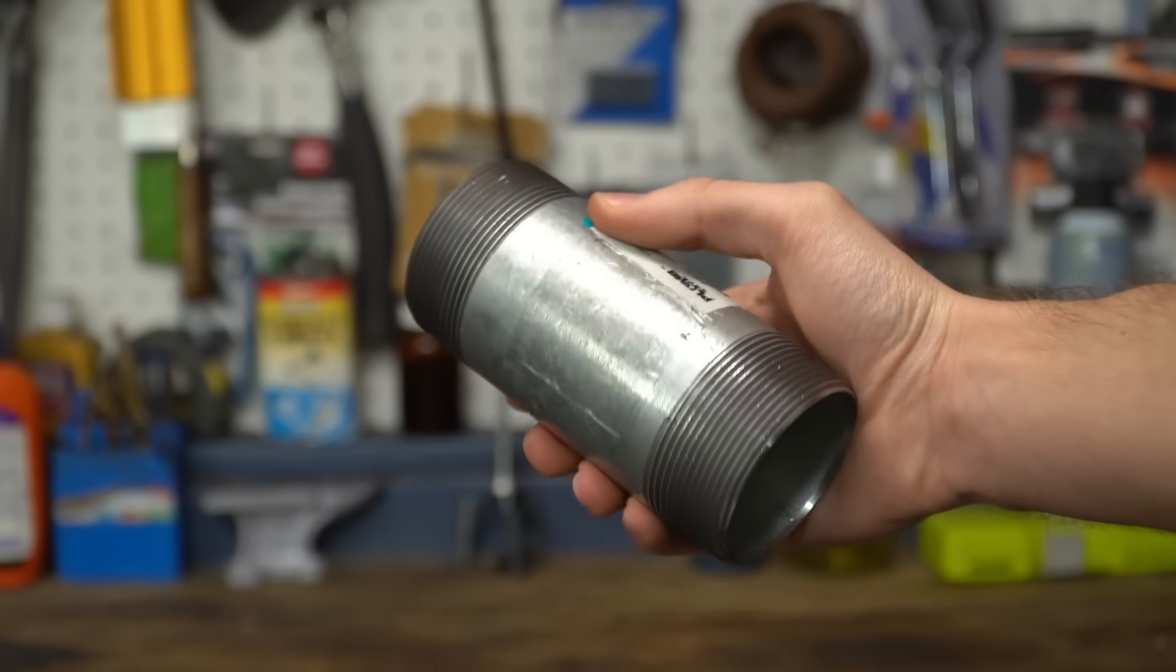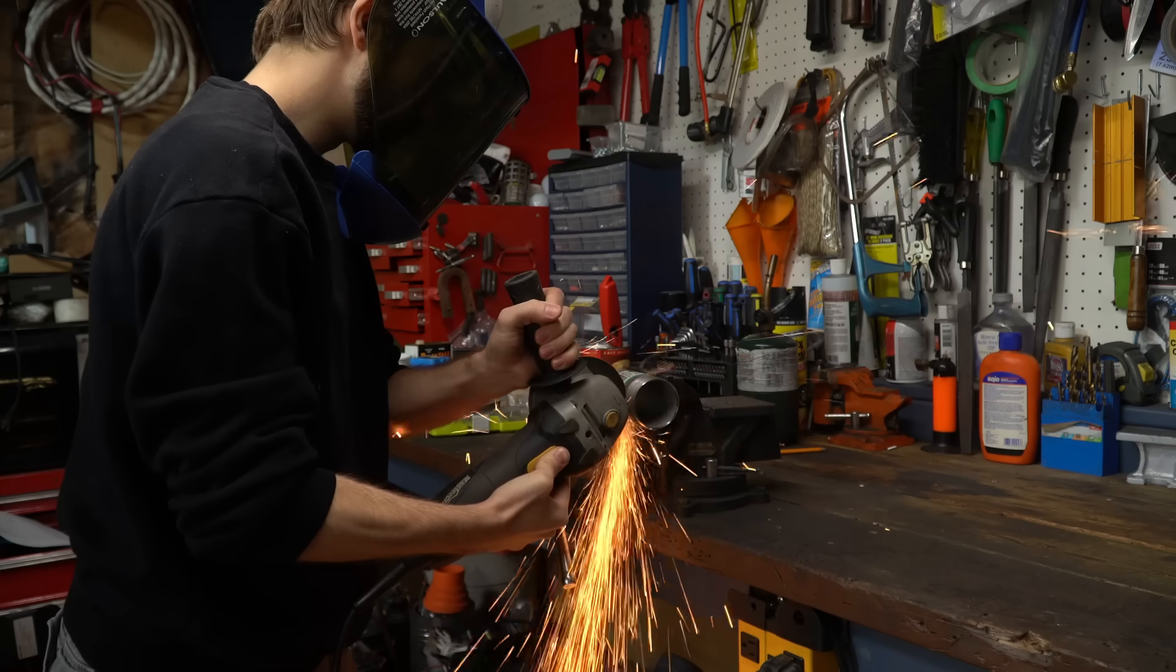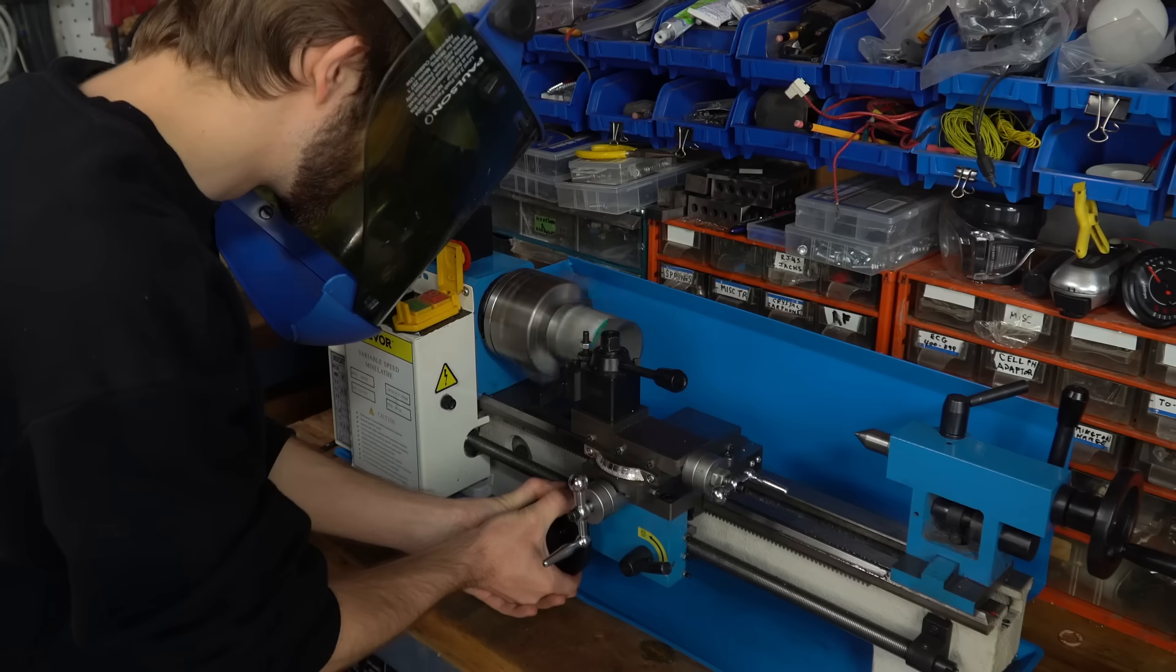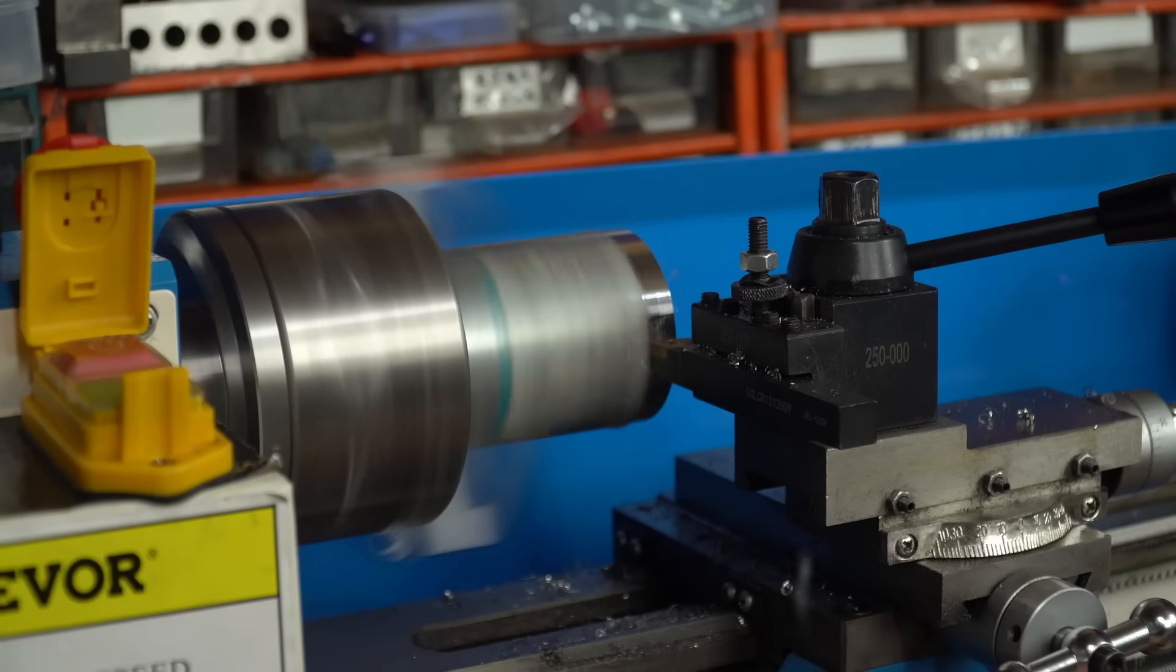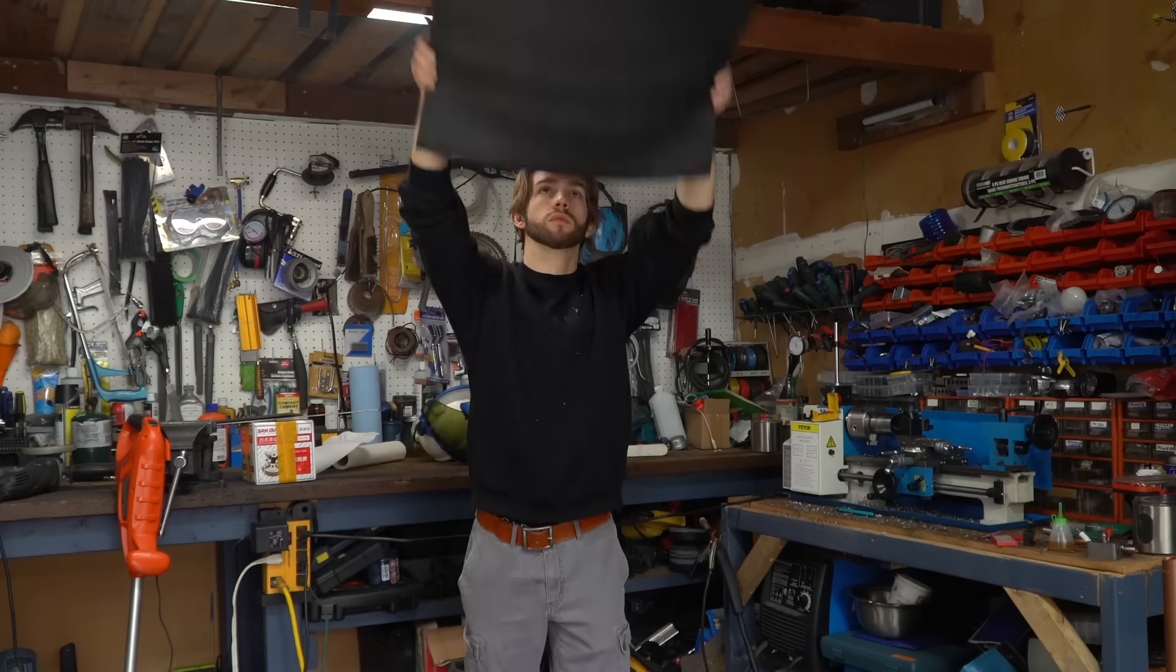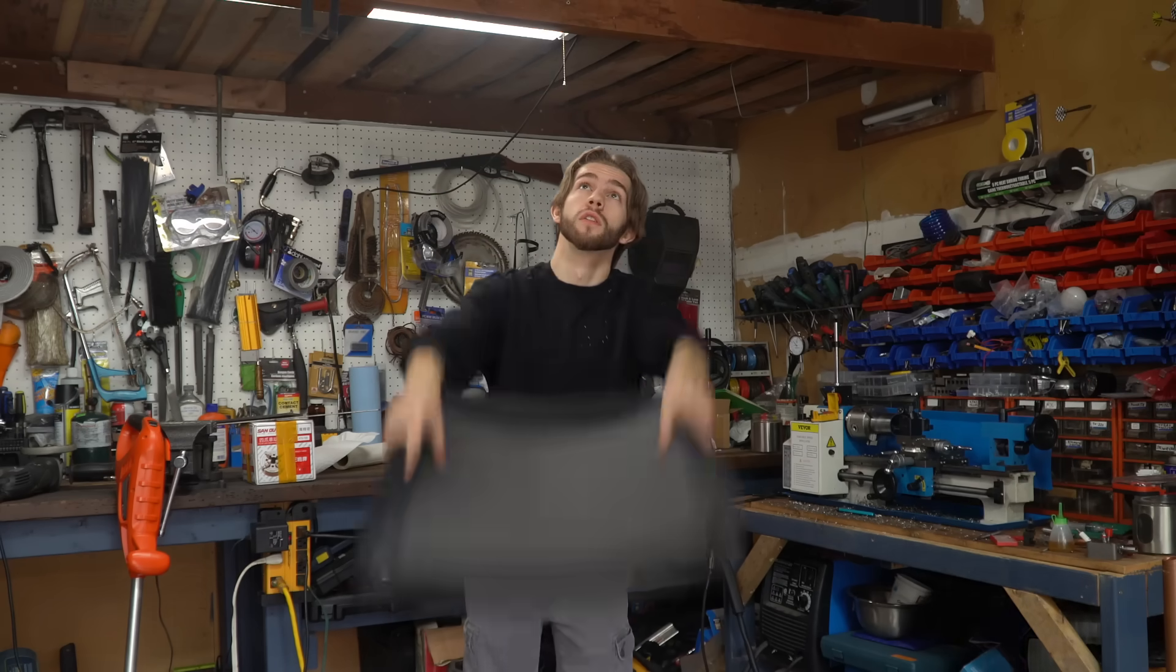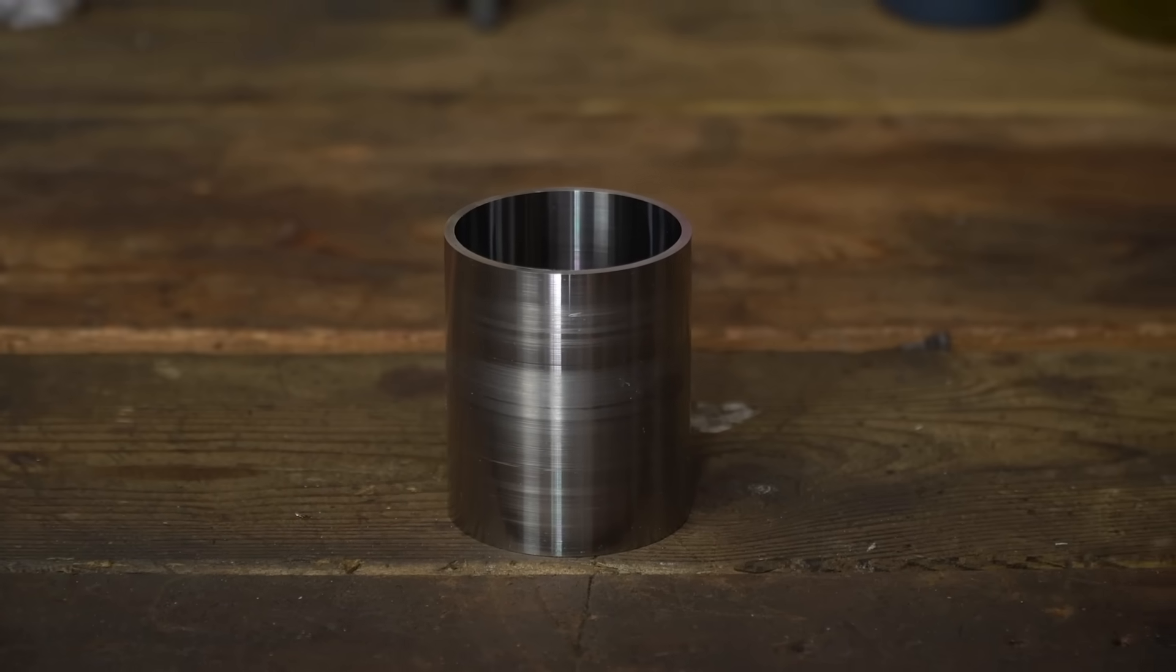So the first order of business is to make the crankcase. After cutting the threaded ends off the pipe, I threw it into the lathe to turn it down to the final size. Which might I say is a lot of fun inside of a closed, ventless garage.